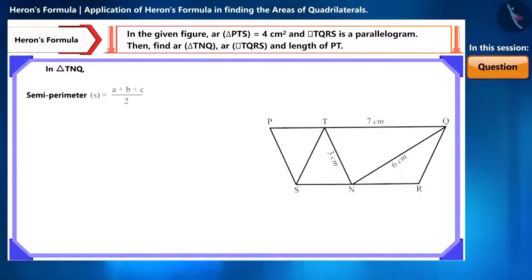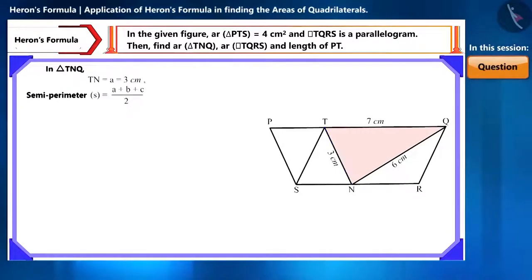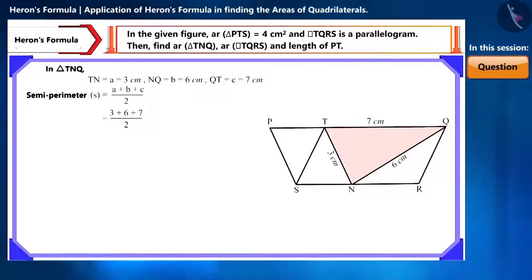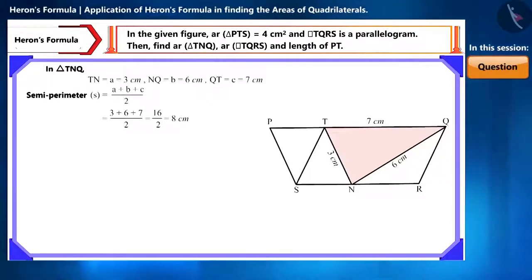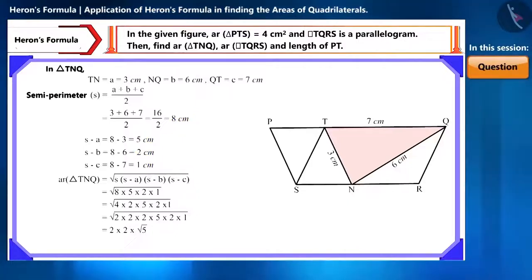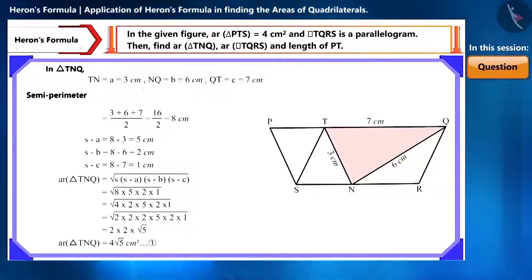First of all, we will find its semi-perimeter, i.e. S. Let's assume the length of side TN as A, the length of side NQ as B, and the length of side QT as C. S is equal to the sum of these three sides divided by 2. We will obtain S as 8 centimetres. Now we will find the value of S minus A, S minus B, and S minus C within brackets. By substituting the values of all these in Heron's formula, we will get the area of triangle TNQ as 4 root 5 square centimetres.